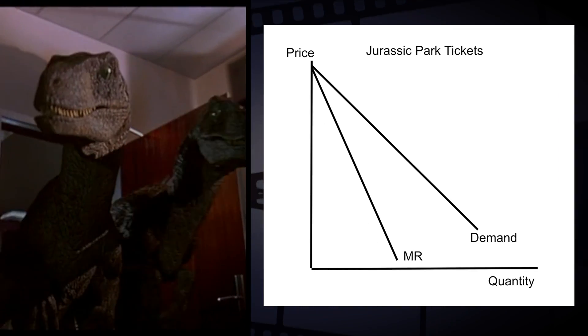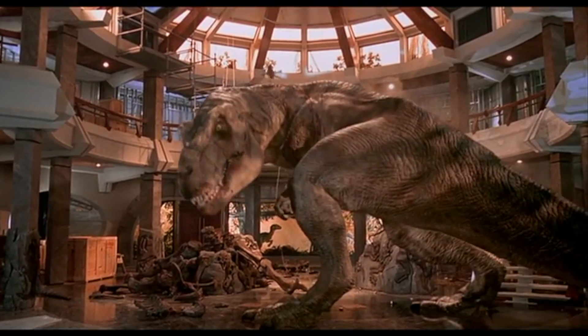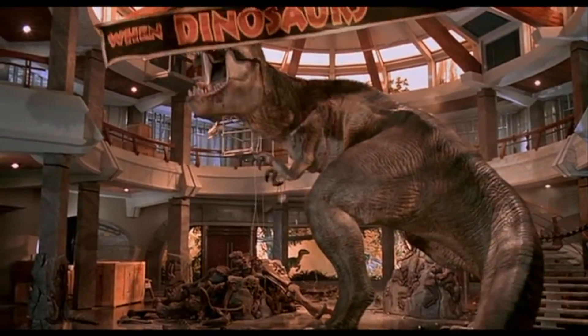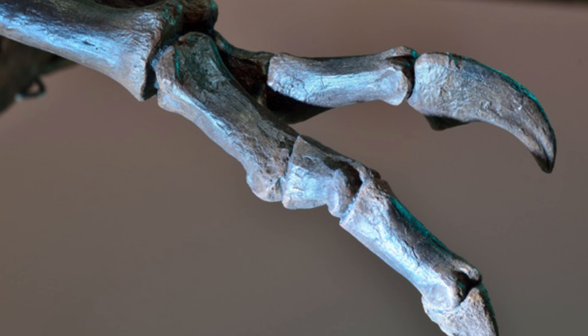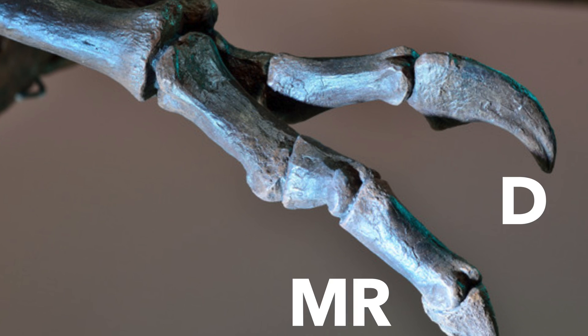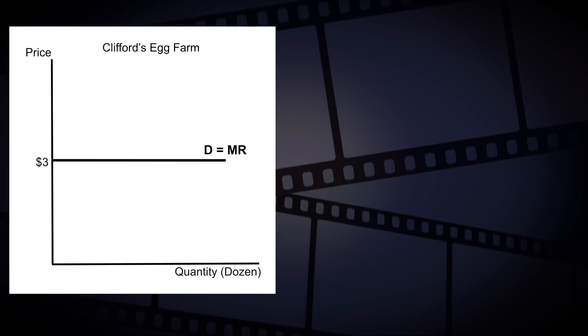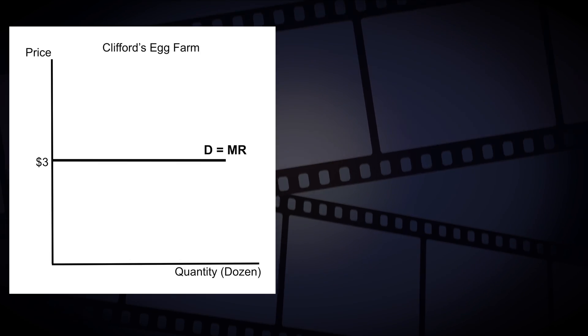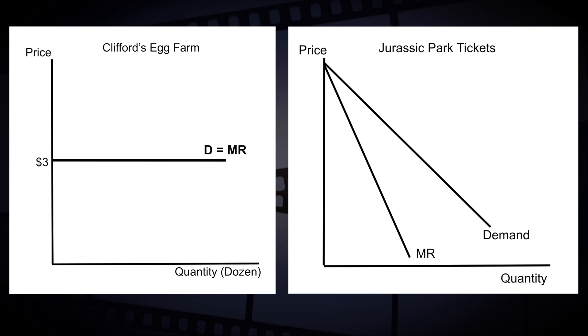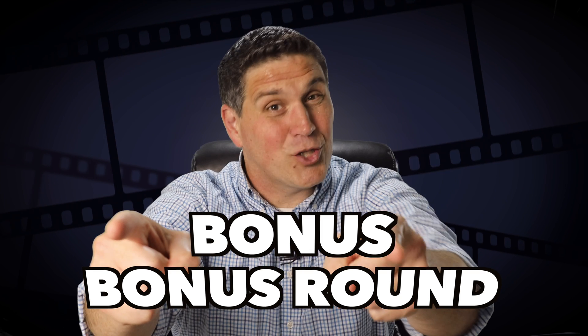Here's a trick to help you remember this. In my Econ Movies episode, I talked about a monopoly being like a T-Rex. If you focus on a T-Rex's hand, what do you notice? I see demand and marginal revenue. The point is there are two graphs you need to know: first, a perfectly competitive firm with a horizontal demand equal to Mr. DARP; and a monopoly that has a downward sloping demand curve and a marginal revenue that's below it. Bonus round!